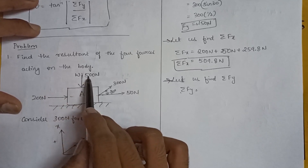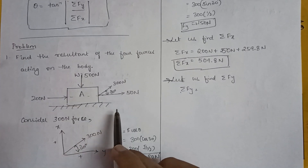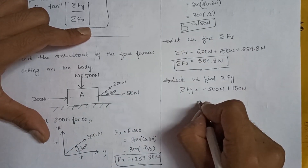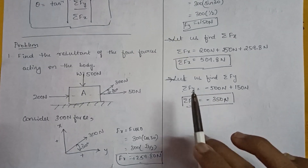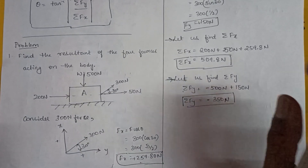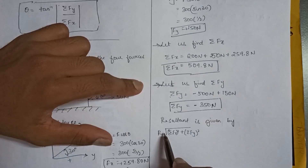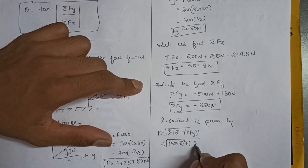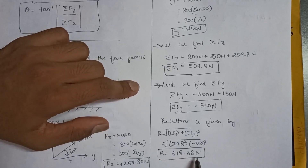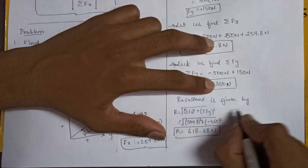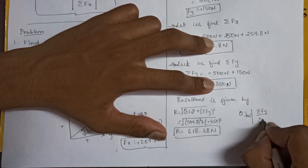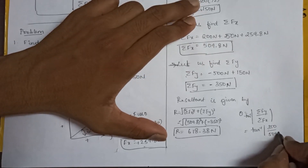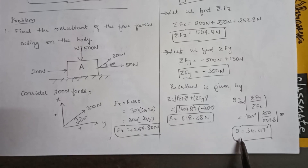Now find ΣFy. The 500 N weight acts vertically downward, so it is negative: −500 N. Adding the vertical component of the 300 N force: +150 N. Therefore ΣFy = −500 + 150 = −350 N. A negative answer is correct — just follow the steps. The resultant: R = √(ΣFx² + ΣFy²) = √(509.8² + 350²) = 618.38 N. The angle of the resultant: θ = tan⁻¹(|ΣFy| / ΣFx) = tan⁻¹(350 / 509.8) = 34.47 degrees.